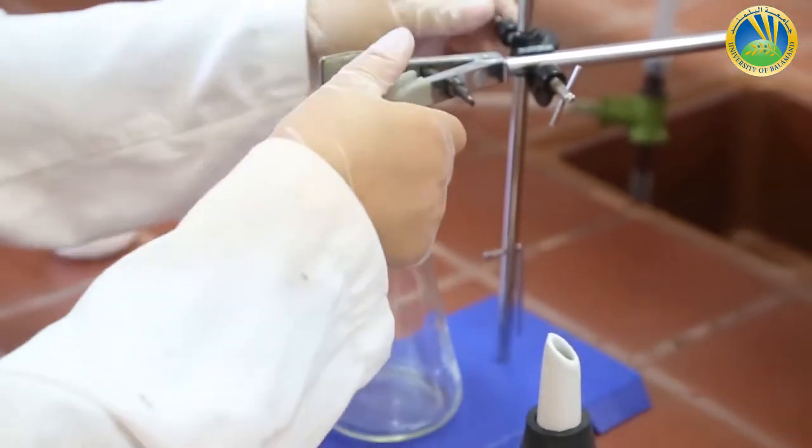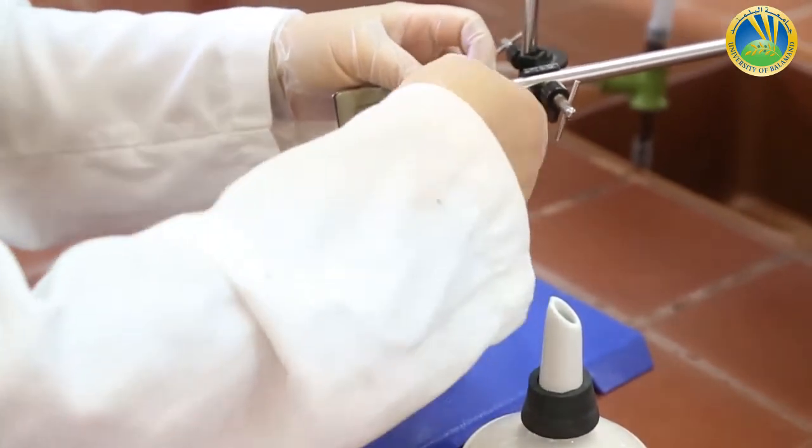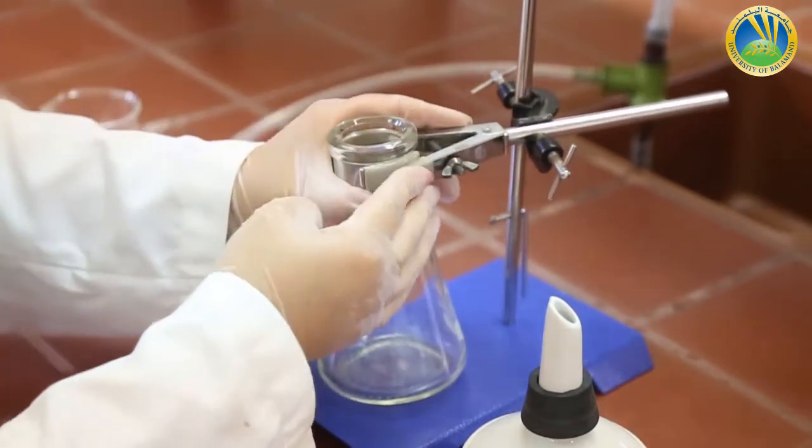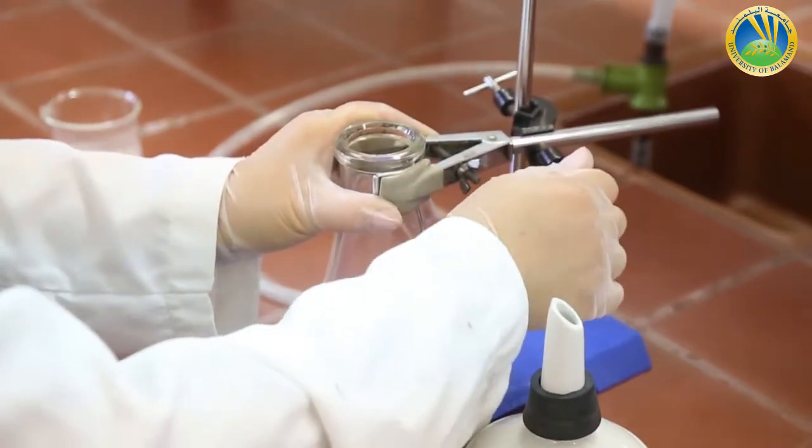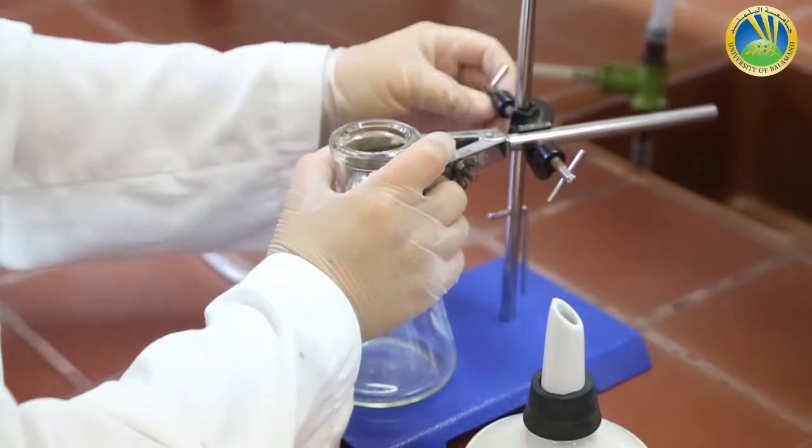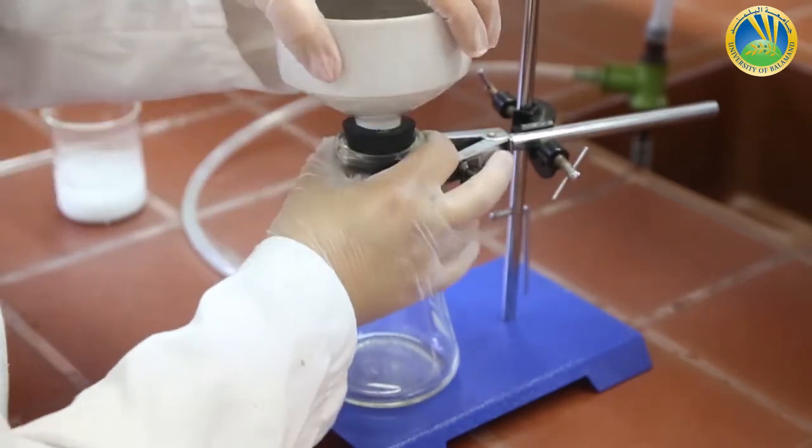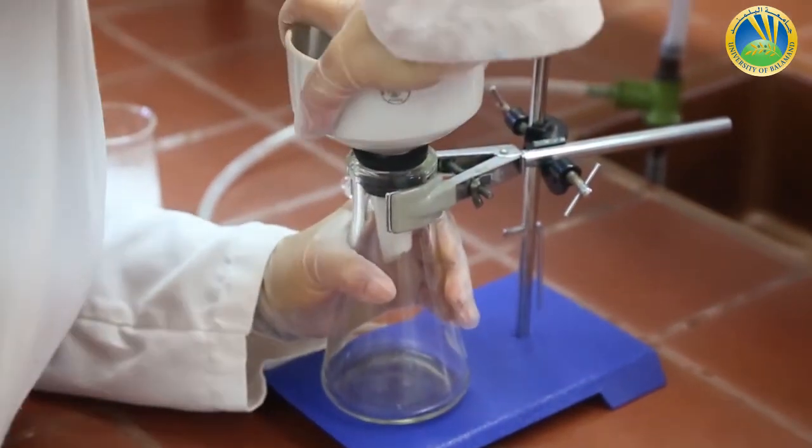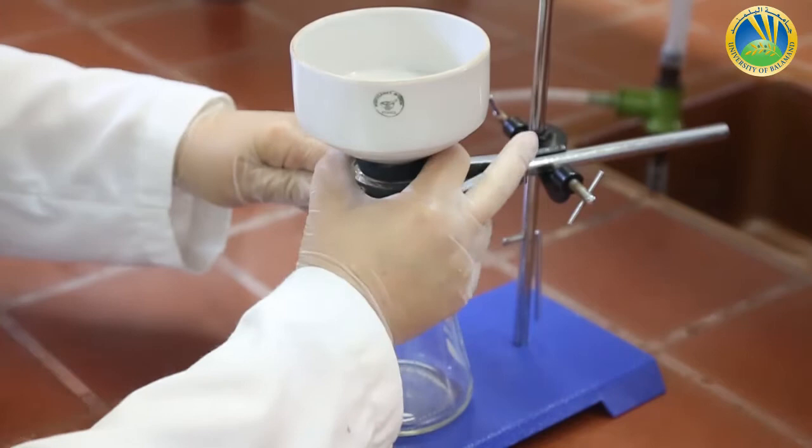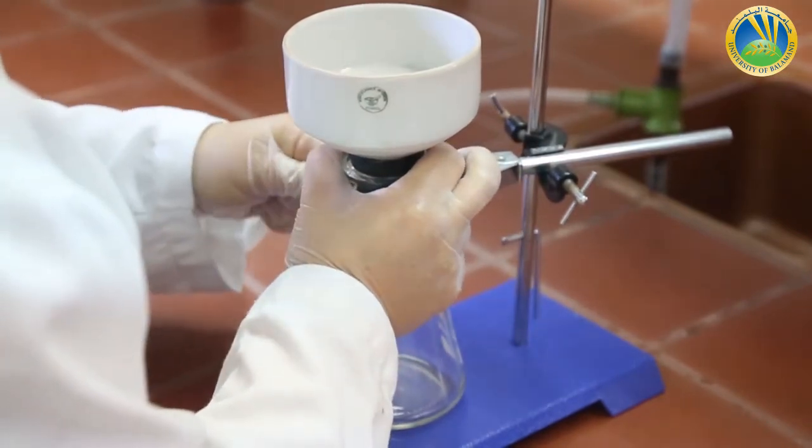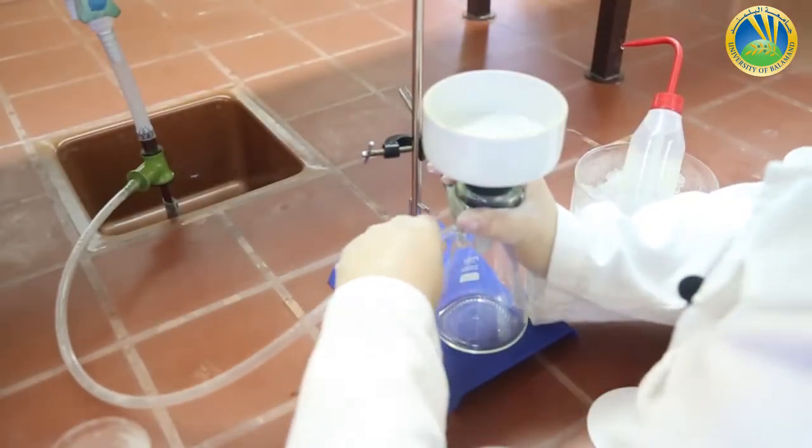First I have to fix the Erlenmeyer flask on the support in the order I told you before. One, two and three. Then I put the funnel of the Buchner filter. I have to connect the vacuum hose.